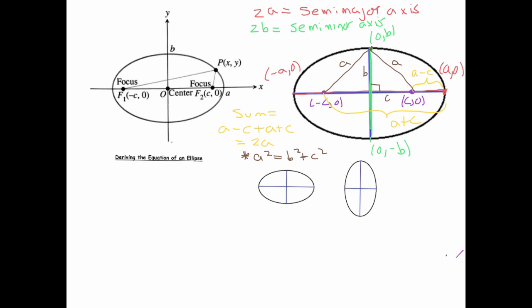Let's start the derivation of the equation of the ellipse. Let's say the distance between focus one and the point p is d1, and the distance between focus two and the point p is d2.